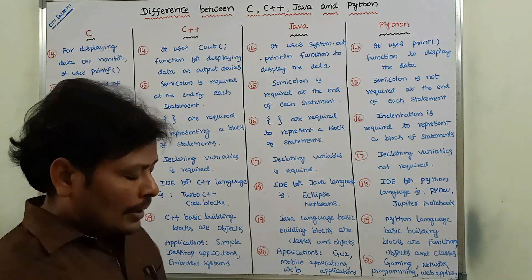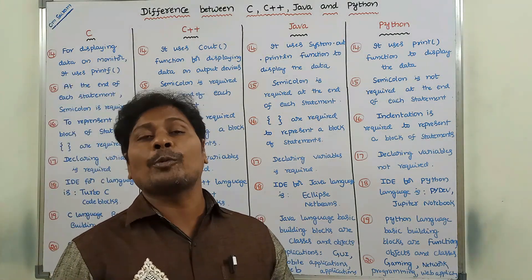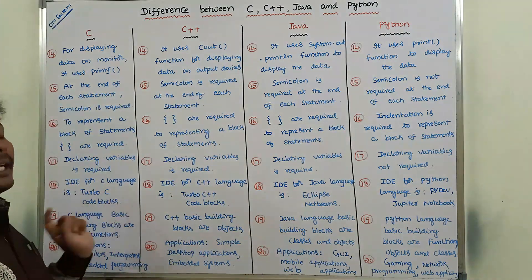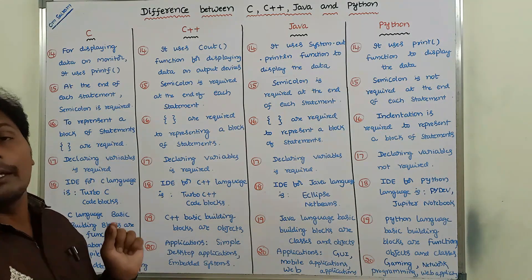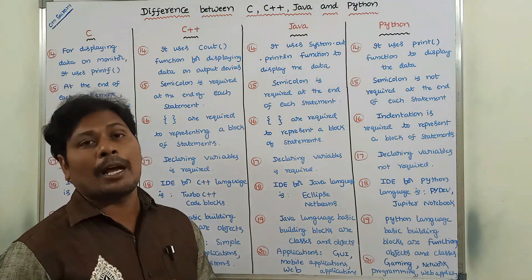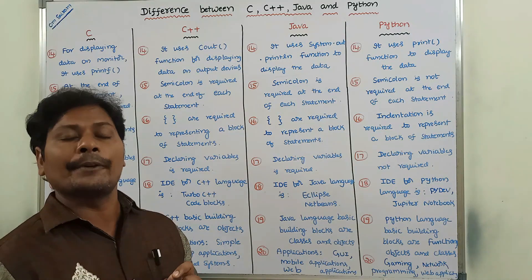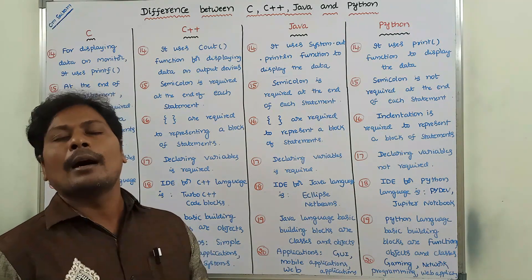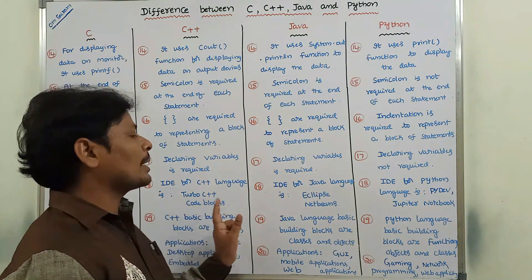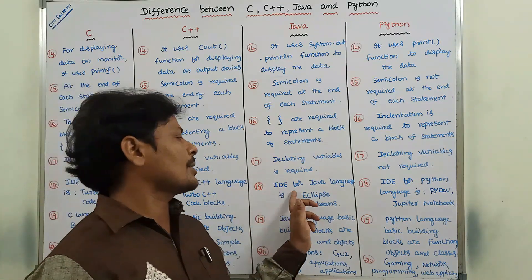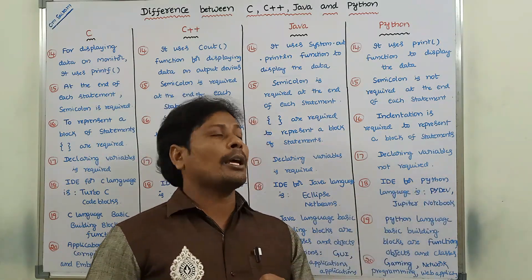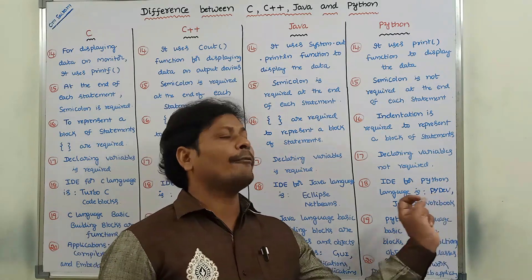For writing C programs, we use editors such as Turbo C editor and Code Blocks. The IDE — Integrated Development Environment — for C++ is Turbo C++ and Code Blocks. For Java, the IDE is Eclipse and NetBeans. The IDE for Python is Jupyter Notebook or PyDev.